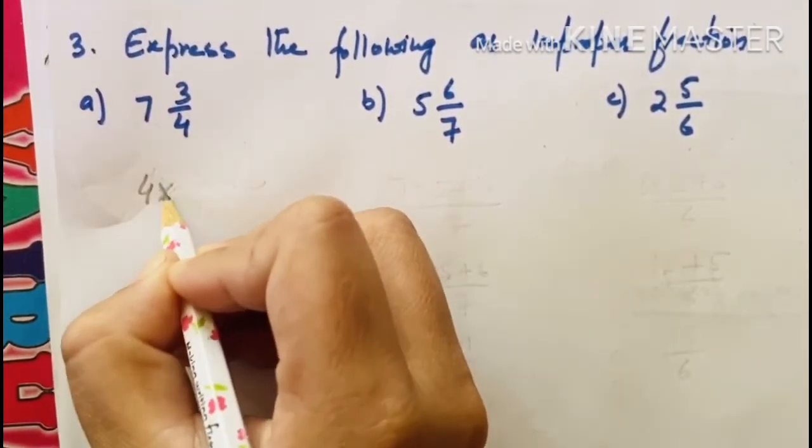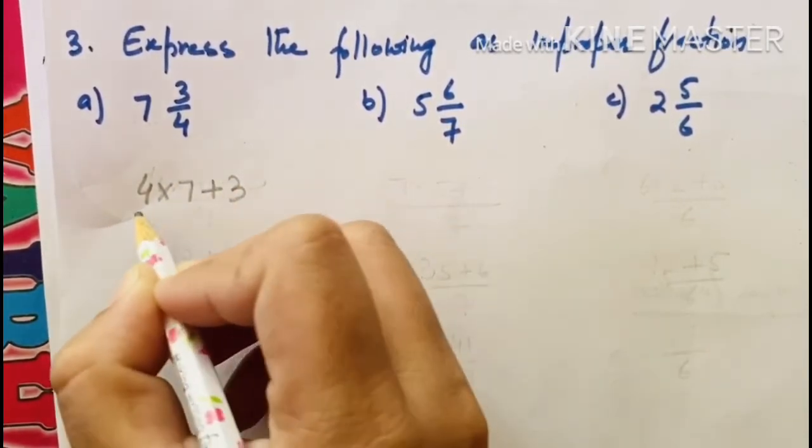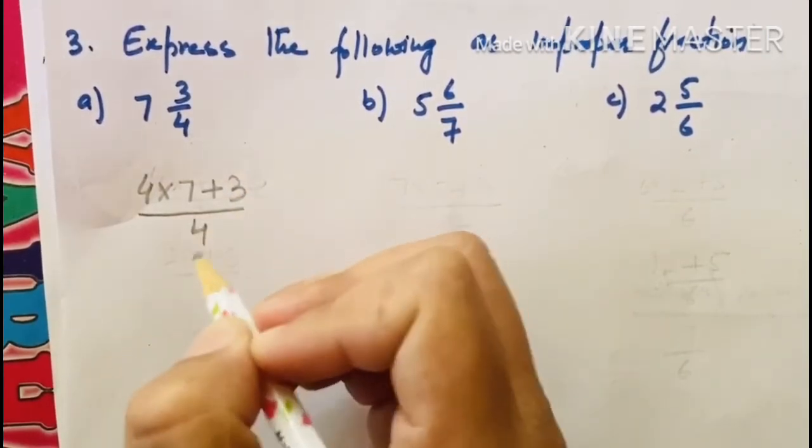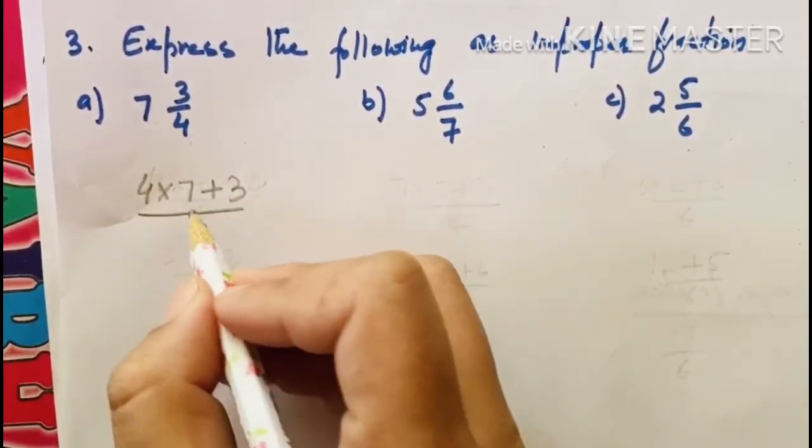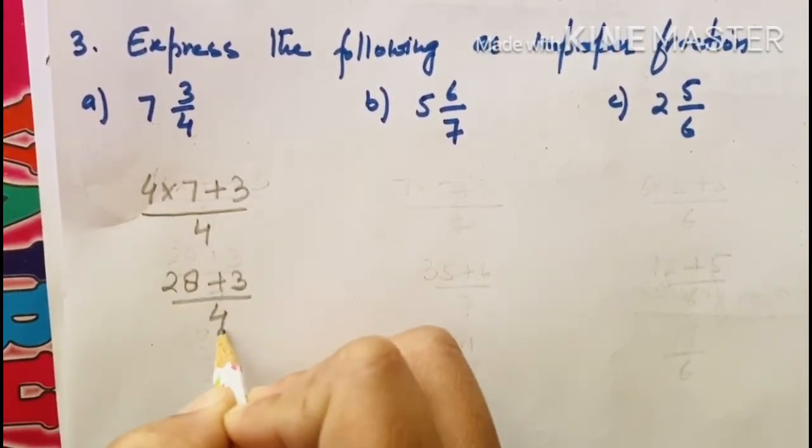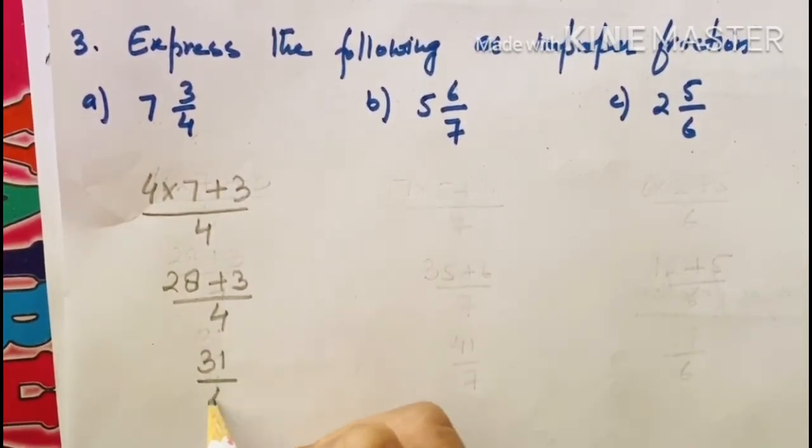4 ko multiply karna hai 7 ki saath, phir plus karna hai 3 ki saath. Upon denominator mein 4 hai to denominator mein 4. 4, 7, 4 za 28 plus 3 divided by 4. Plus karo 28, 31 upon 4. This is your answer, simple.